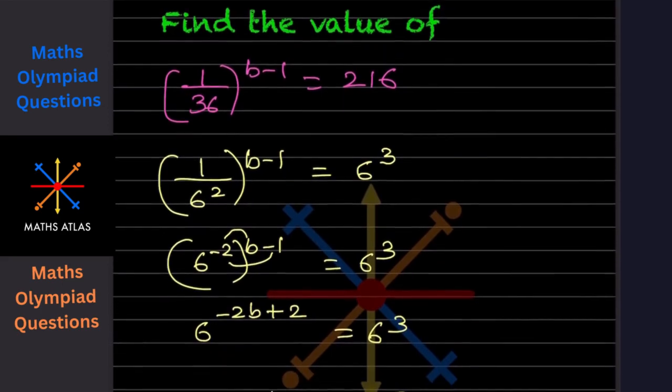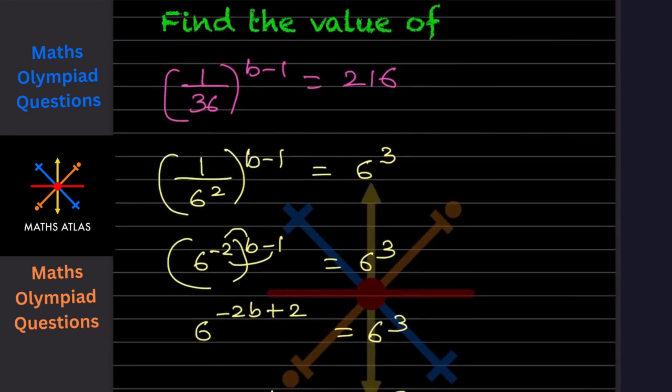For this one, we need to find the value. Now you can see this is 36, so we can write it as 6 times 6.